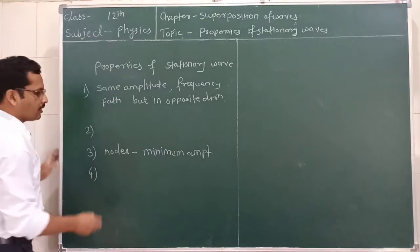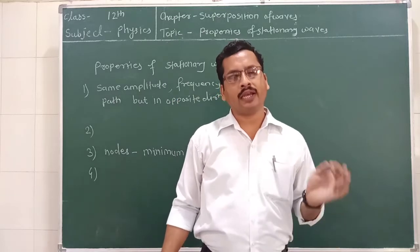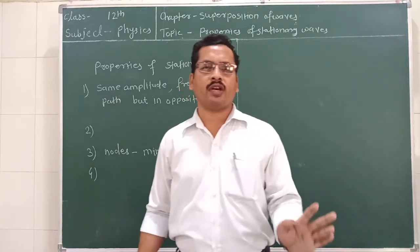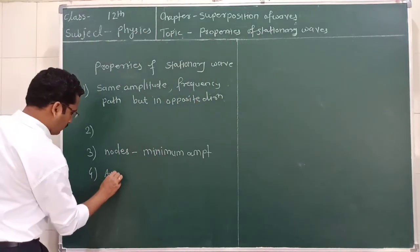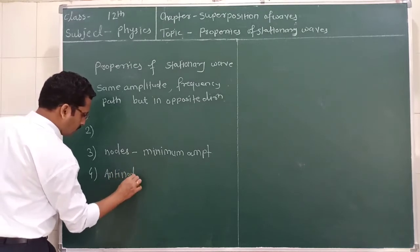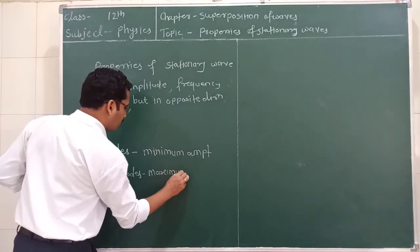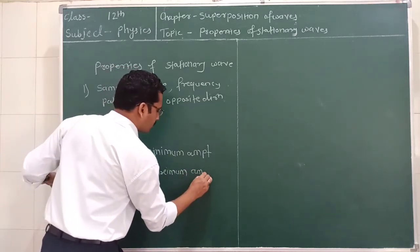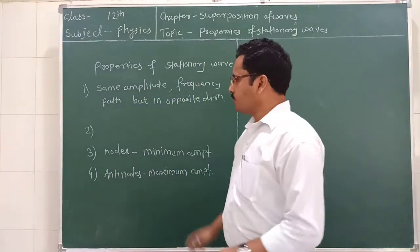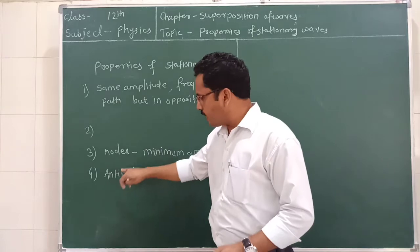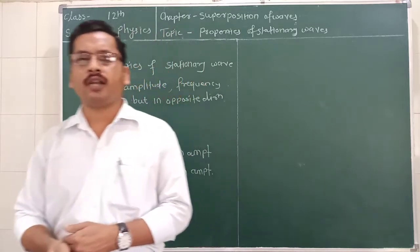The next property: in a stationary wave, some particles vibrate with the maximum amplitude, and such points are called antinodes. Antinodes vibrate with the maximum amplitude. We also see that nodes and antinodes are alternately produced — this is another property, that nodes and antinodes are alternately formed.